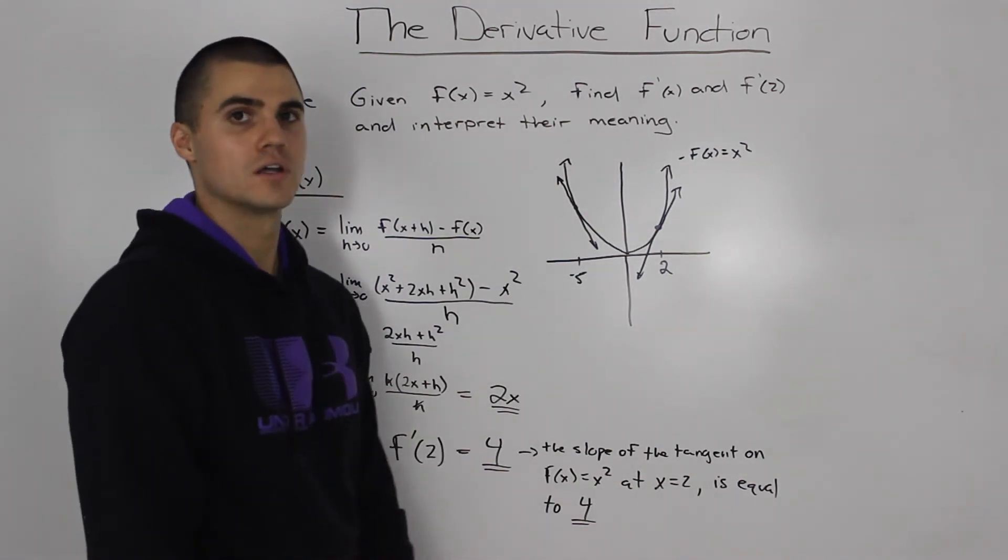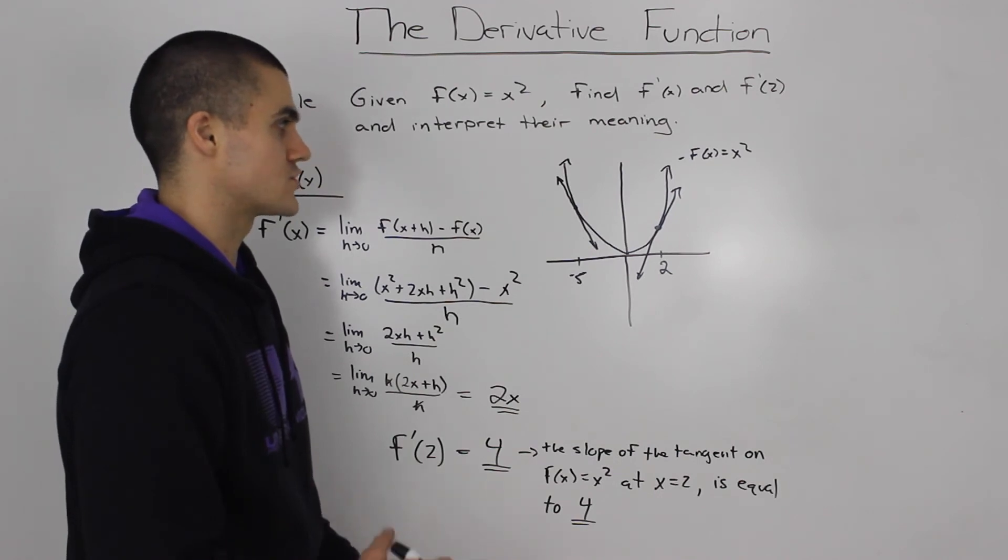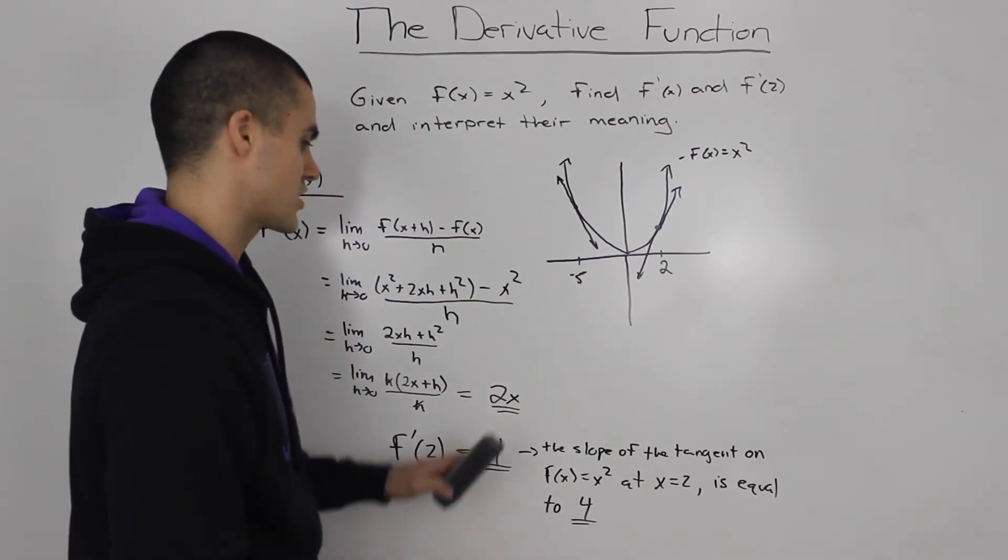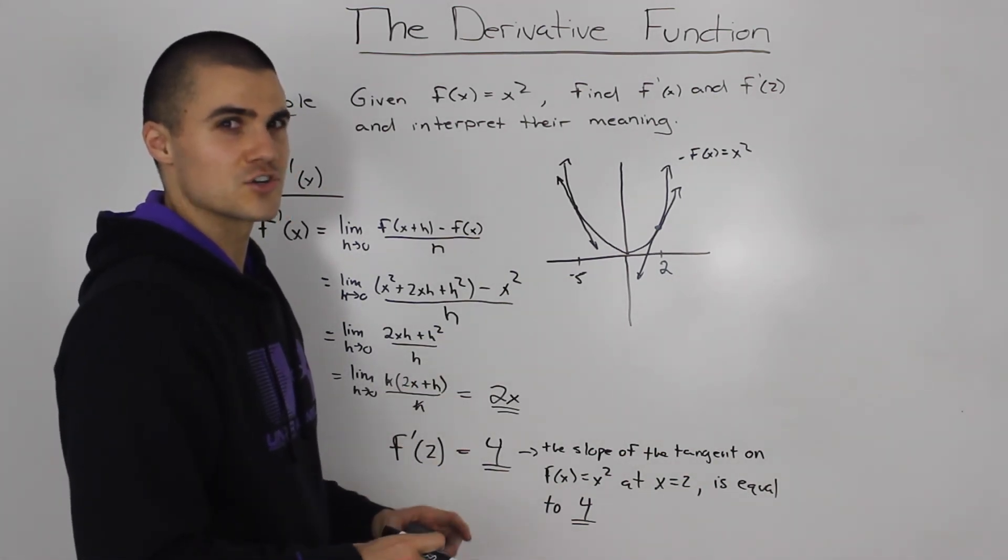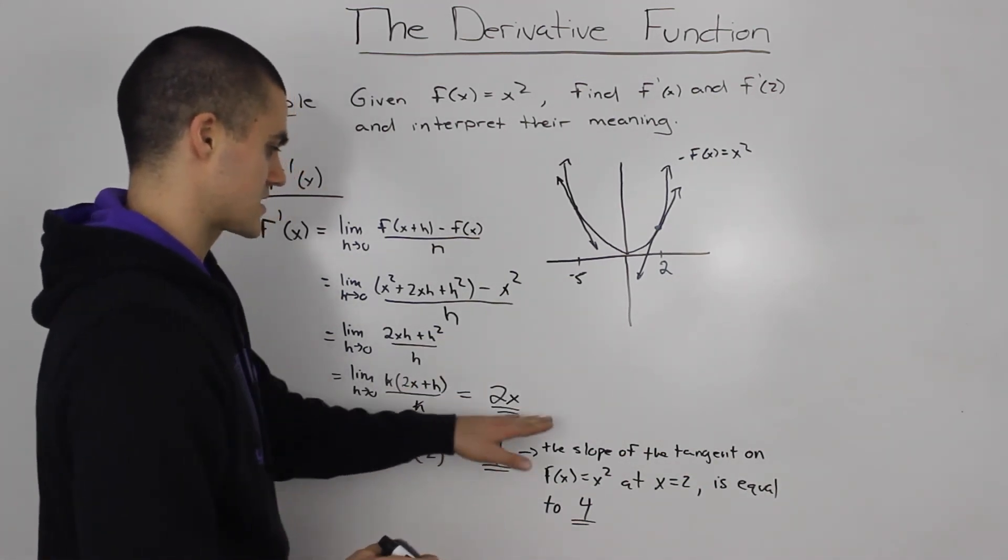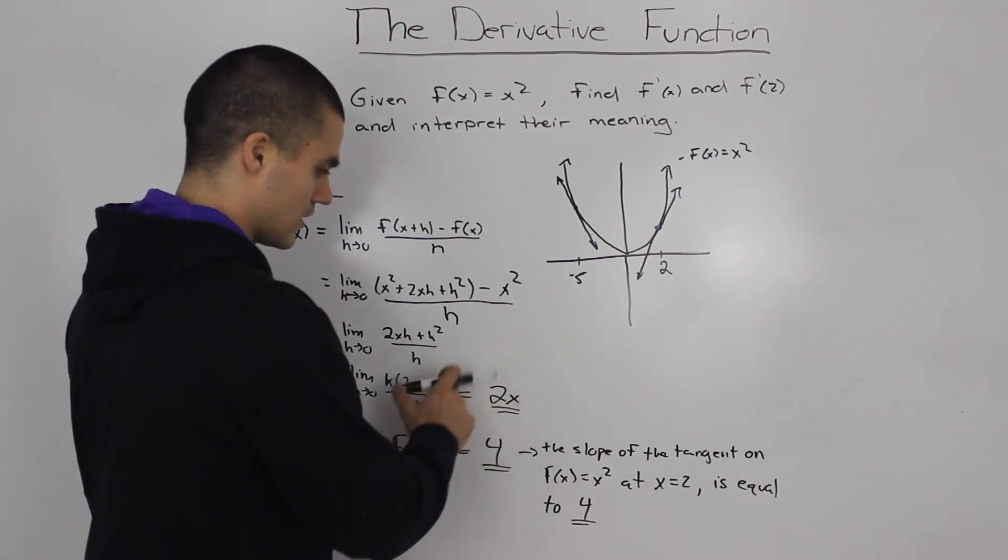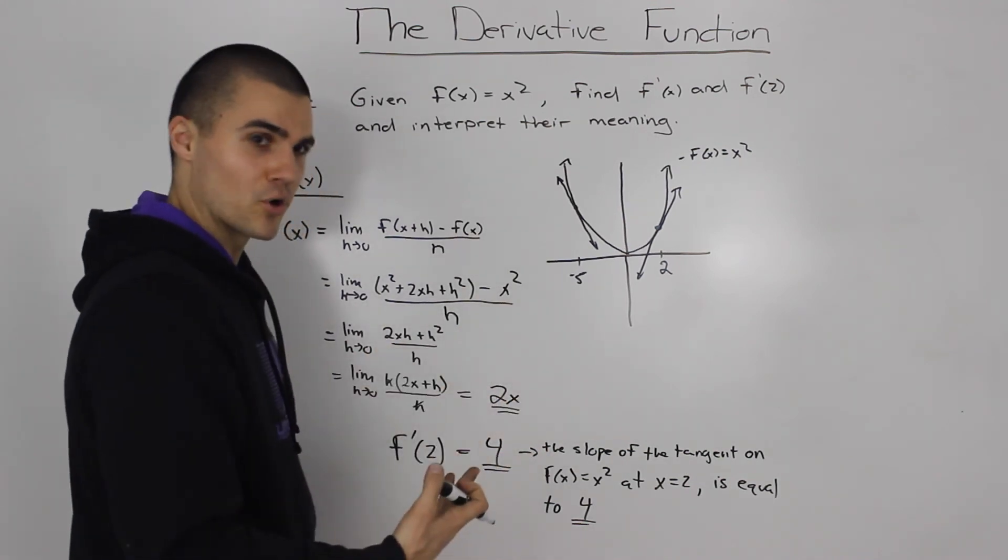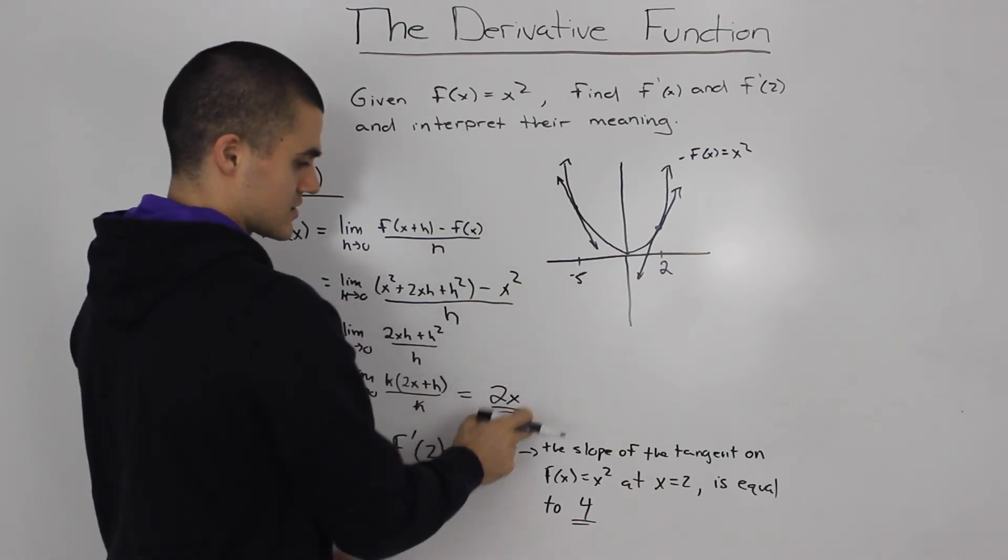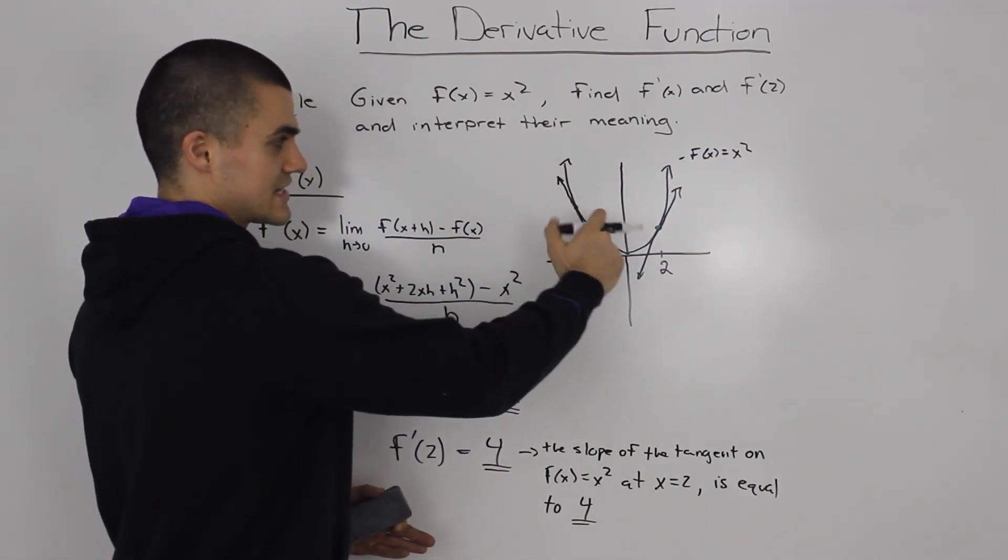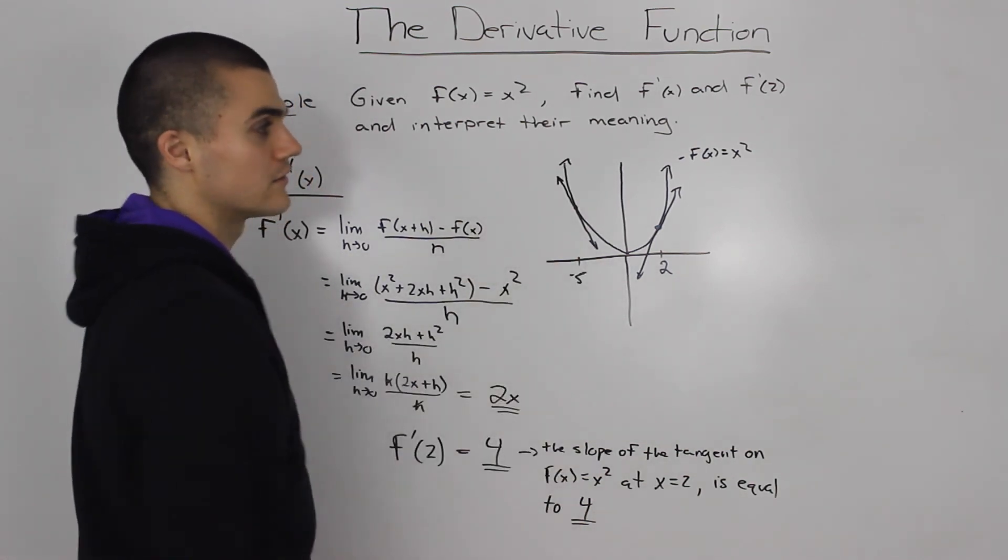So, the derivative always gives you the slope of the tangent. It's very important to wrap your mind around that and understand what it actually is because you're going to be getting more complex questions where you're really going to have to understand what's going on. And this is the fundamentals. You have to know this. You have to understand this. So, again, I sound like a broken record probably. The derivative of a function is always giving you the slope of the tangent at any x value on the function.